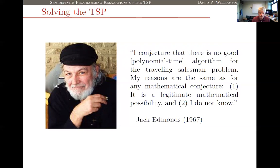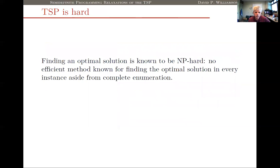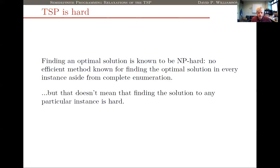There has been some codification of what this means, and now there's much more evidence that the mathematical possibility seems closer to being a reality, but we still don't know. Finding an optimal solution in the decision version of the TSP is known to be NP-complete; finding an optimal solution is known to be NP-hard. We have no efficient method for finding the optimal solution in every instance aside from essentially complete enumeration — trying all possible tours and searching for the best one.